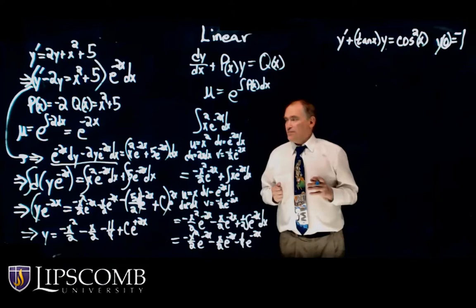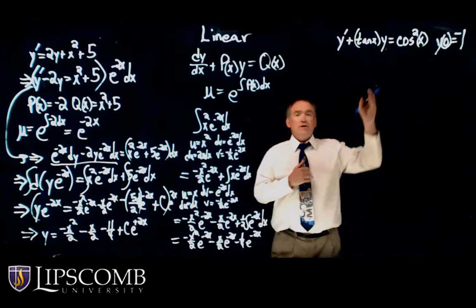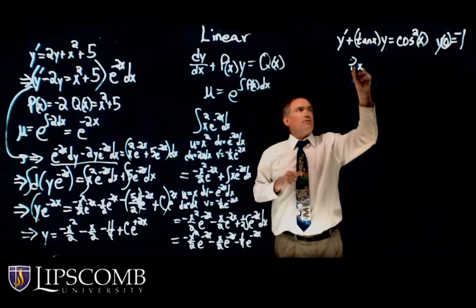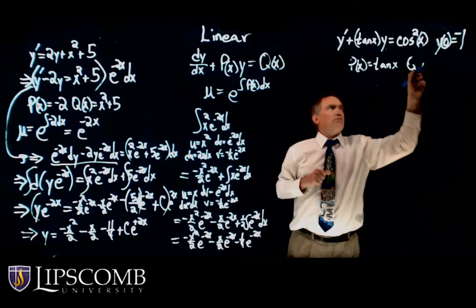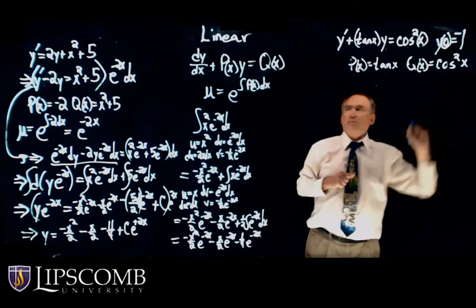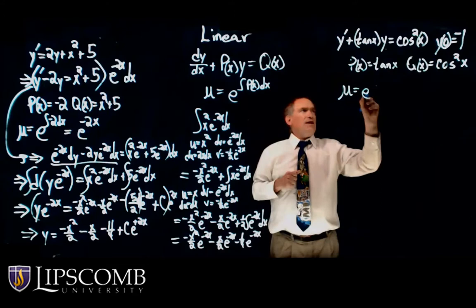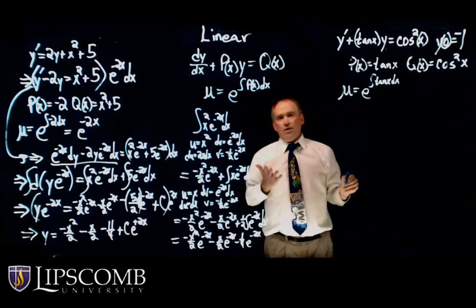That was good integration practice — integration by parts twice. Now let's look at the next example. This one is already in the form we want. P(x) is tangent of x, Q(x) is cosine squared of x. The integrating factor μ would be e to the integral of tangent of x dx.